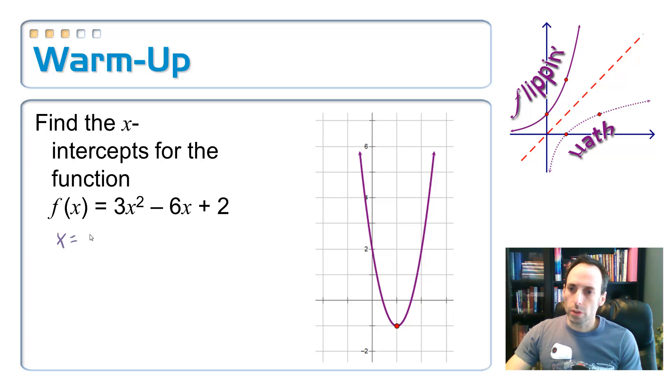So, we're going to have to use the quadratic formula on this. So, x is going to be equal to negative b, so 6, plus or minus square root of b squared, 36, minus 4 times a times c, all over 2 times a, which is another 6.